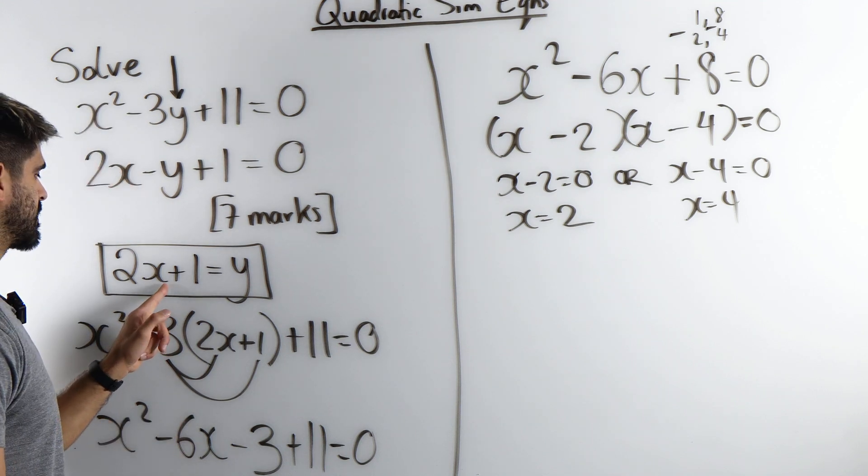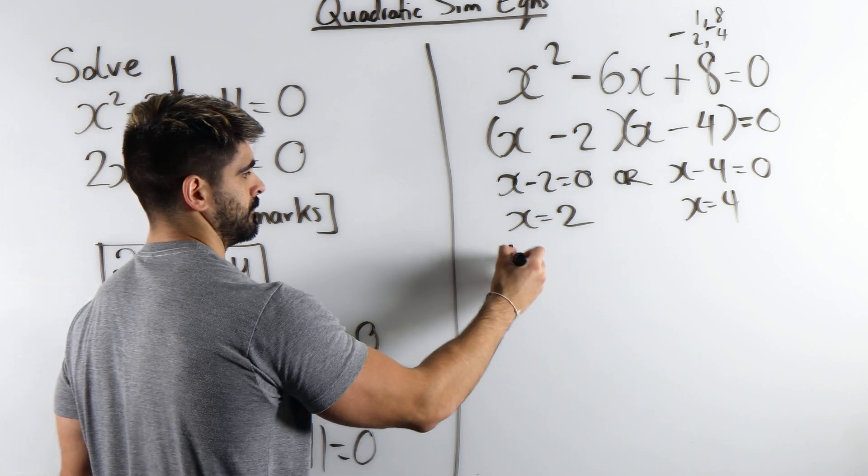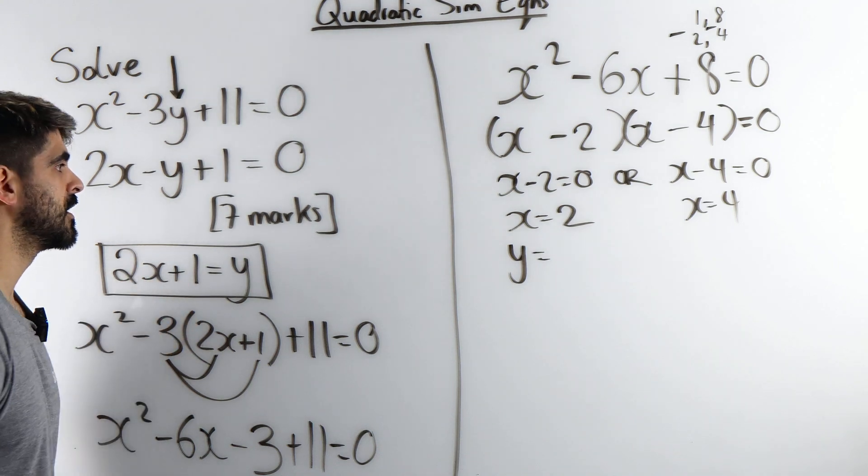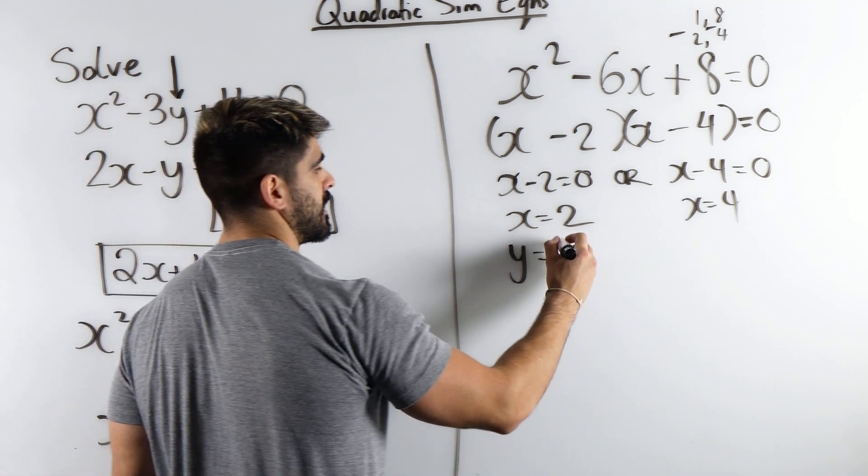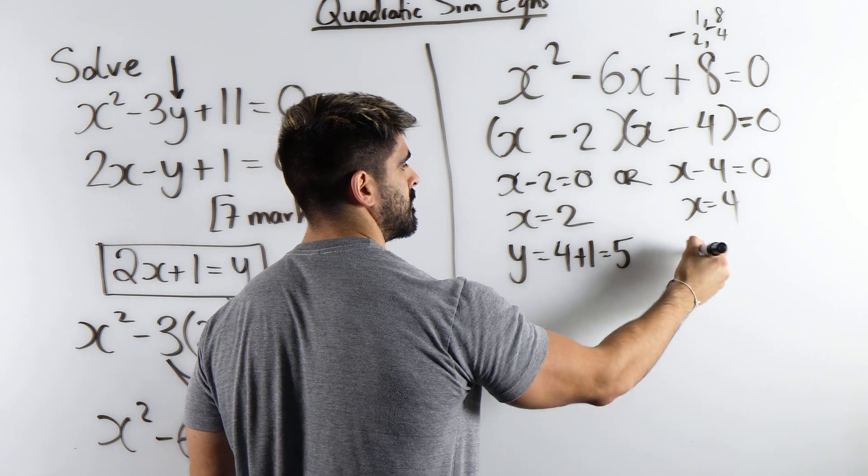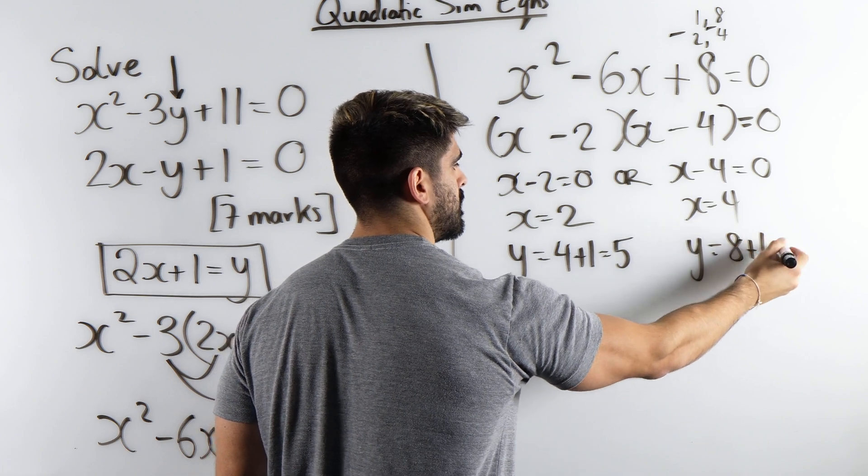Now we go back to the subject equation to find the y coordinate. So y is 2x plus 1. So you double the x value, then you add 1. When you double this, you get 4, then you add 1, which is 5. Here, double the x, 8 plus 1, which is 9.